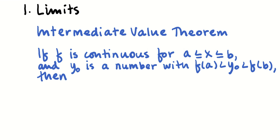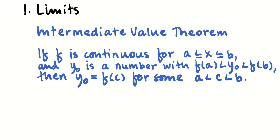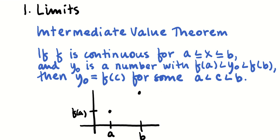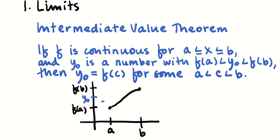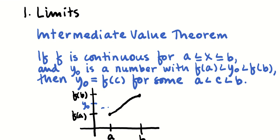We also need to know the Intermediate Value Theorem — a consequence of continuity. If a function is continuous on a closed interval and we have some y value y₀ between f(a) and f(b), then y₀ = f(c) for some c between a and b. Because the function is continuous, it must cross over that horizontal line, giving us some intersection at some c in that interval.